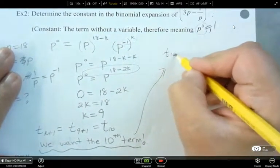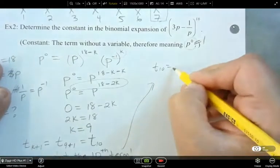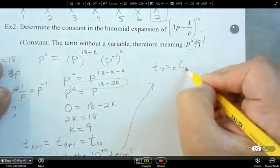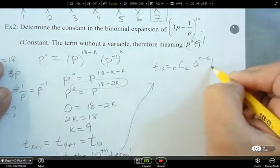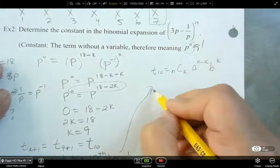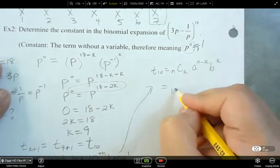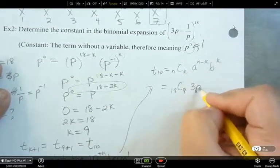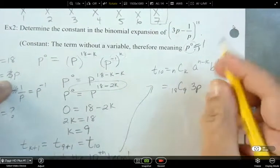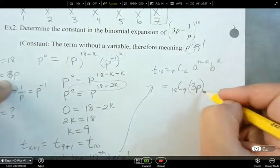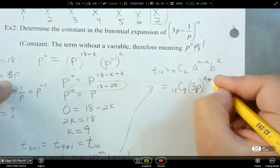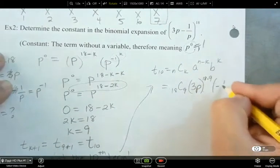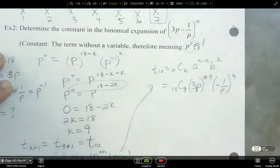And so t_10 is, and we're going to use our n, c, k, a to the n minus k, b to the k. All right, so that is 18c9, 3p. Now I'm going to put in my 3 here, and I'm going to keep everything that I have. So 18 minus 9, and then negative 1 over p to the 9.